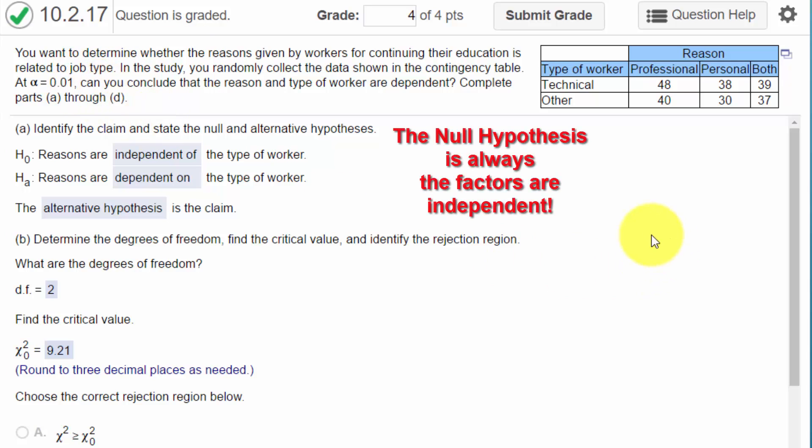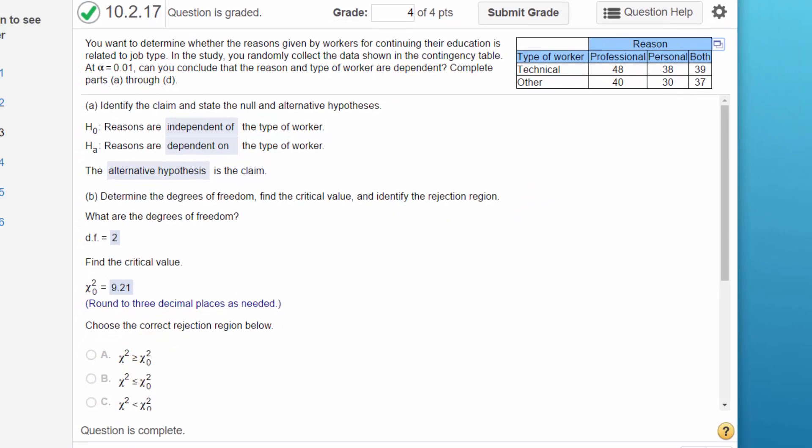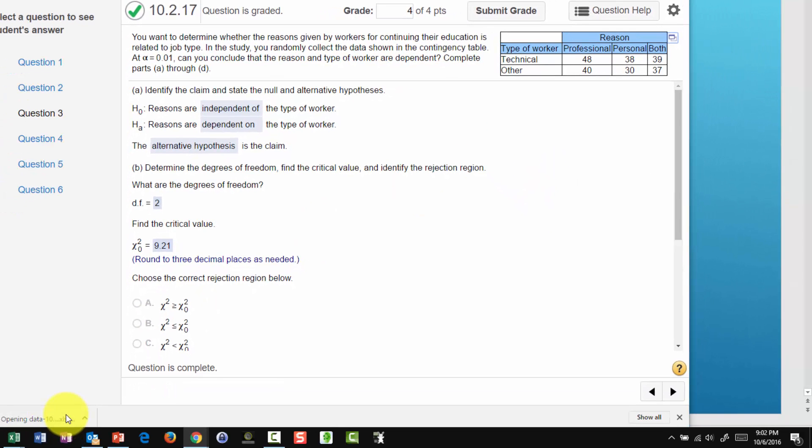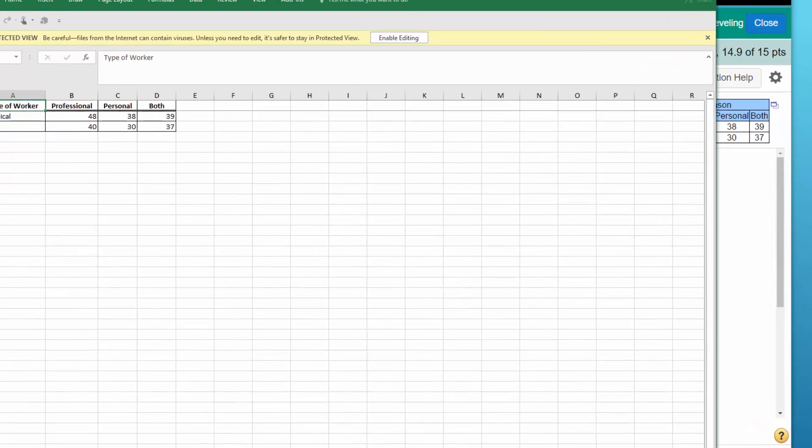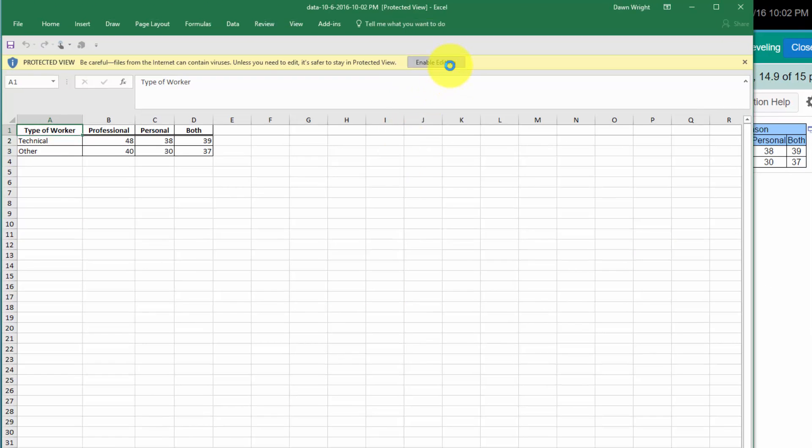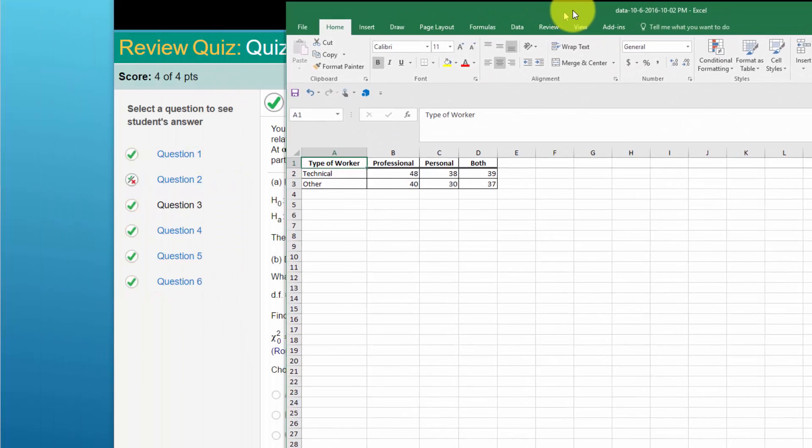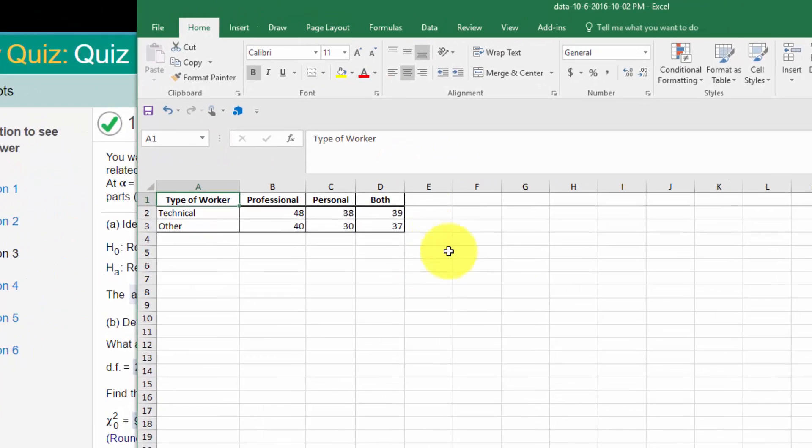So we're going to solve this using PHStat in Excel. I'm going to click on the icon and open it in Excel. We get our spreadsheet. We'll open it up. We have to enable editing. I'm going to bring it over here. Here's our data.